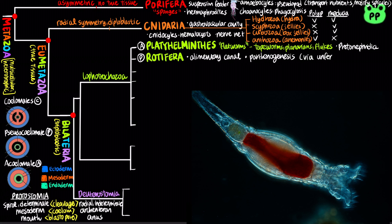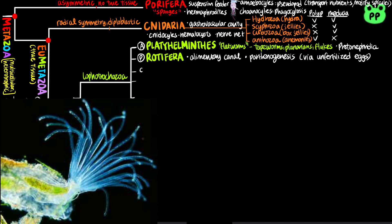Rotifers reproduce by parthenogenesis, in which females produce offspring from unfertilized eggs. The phylum Ectoprocta, which means "moss animal," are coelomates that form colonies encased by a hard exoskeleton.